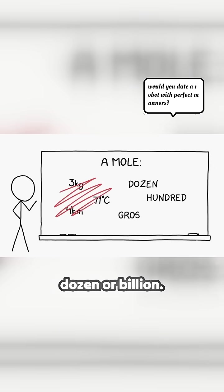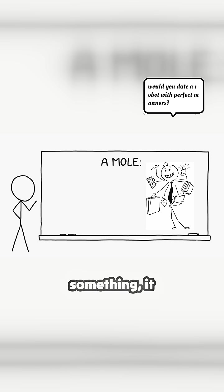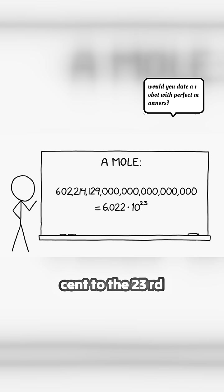It's not a typical unit though. It's really just a number, like dozen or billion. If you have a mole of something, it means that you have 602 sextillion, 214 quintillion, 129 quadrillion, which is usually written 6.022 times 10 to the 23rd.